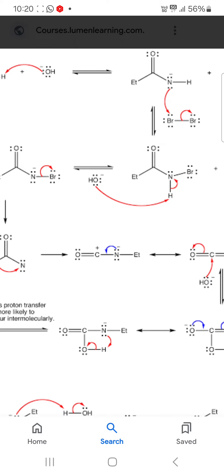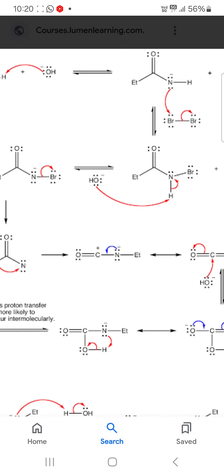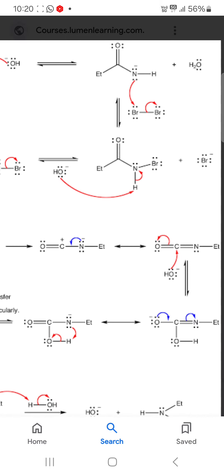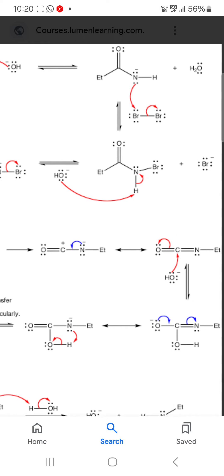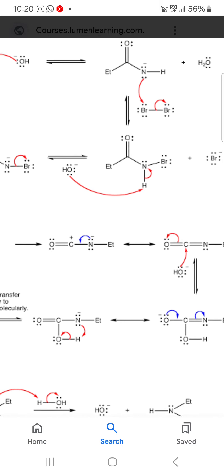Now, nitrogen contains lone pair of electrons where negative charge is present. So it reacts with molecular bromine, and a new nitrogen-Br bond is formed.